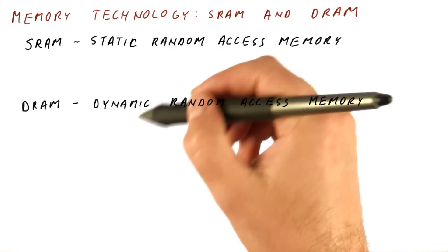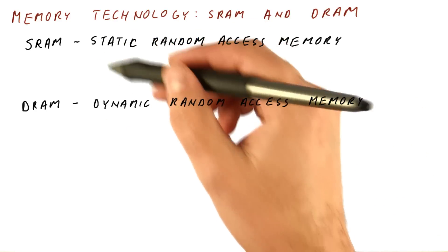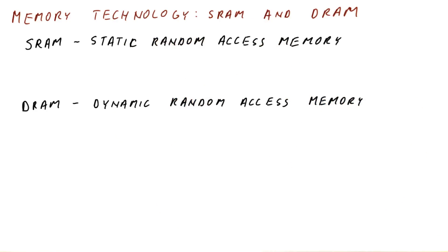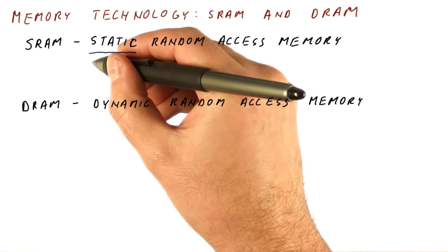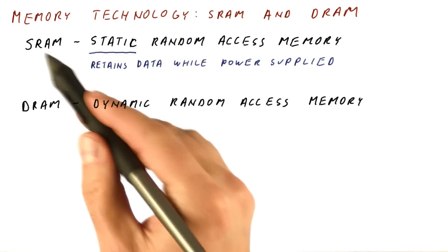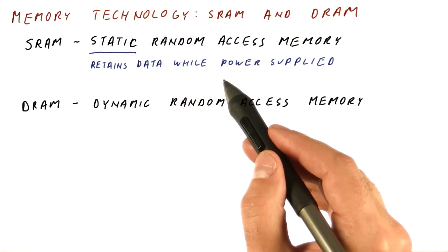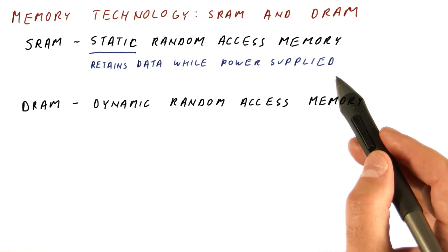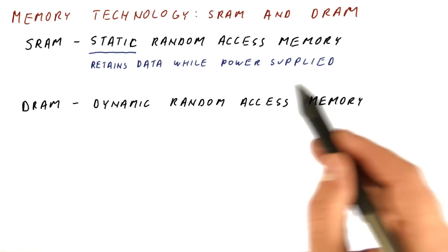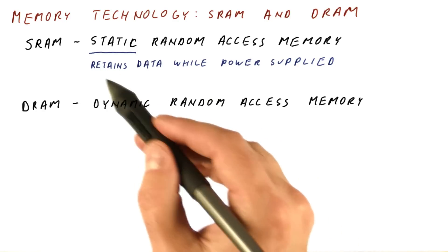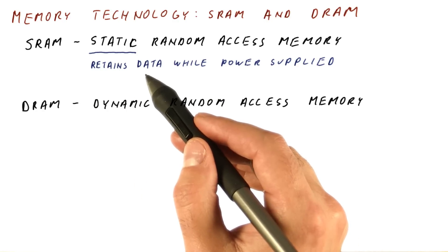The only difference between SRAM and DRAM is this static or dynamic behavior. Static in SRAM refers to the fact that SRAM retains its data while power is supplied. As long as you connect it to a power source, it's going to retain the data that you wrote to it.